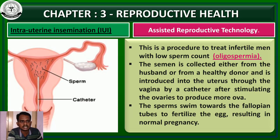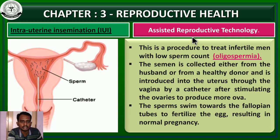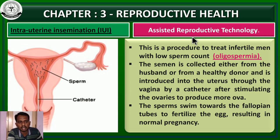The topic is assisted reproductive technology. This technology helps couples who are unable to produce their children in a normal way.